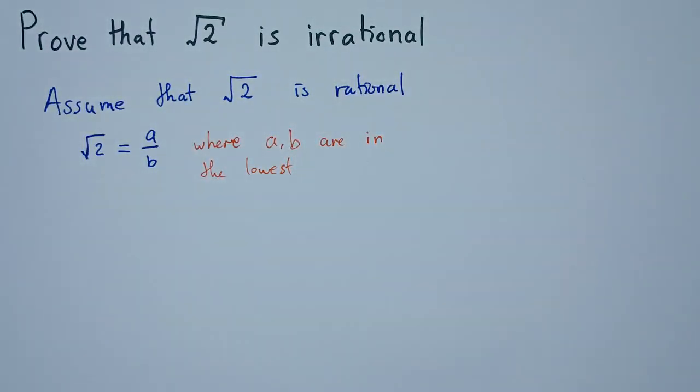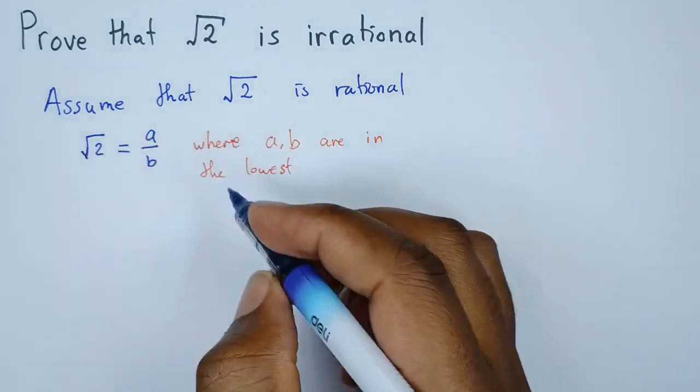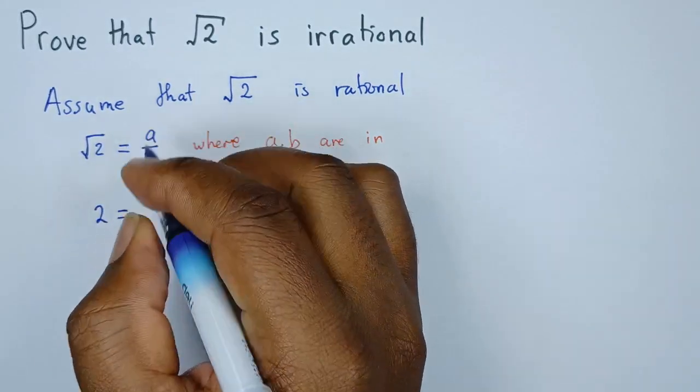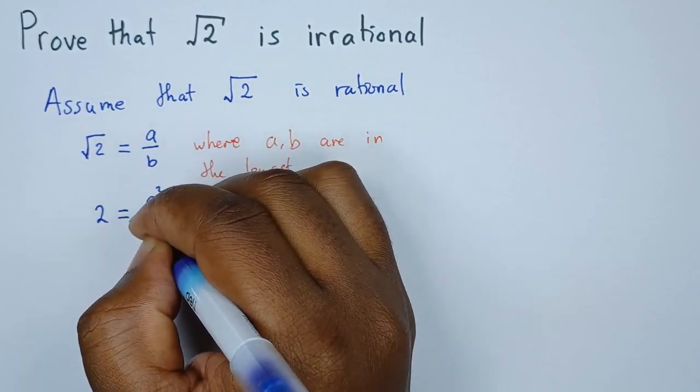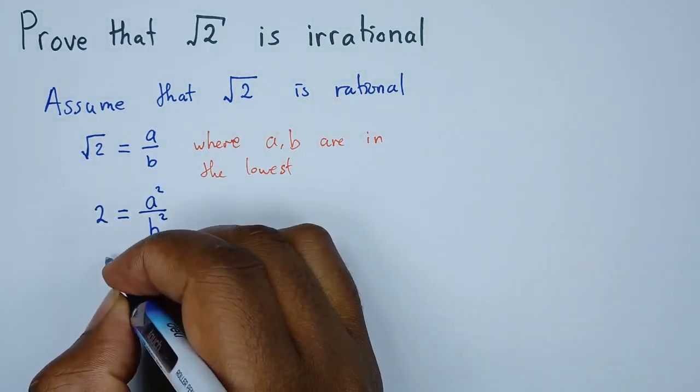So first thing we do is say that root 2 equals a over b. Then what we want to do is introduce a square to both sides, so that if we square root 2 we're going to get 2. If we square a we have a squared, we square b we have b squared. Then we can cross multiply, so cross multiplying will simply give us 2b squared equals a squared.